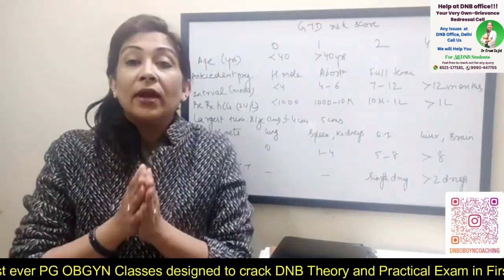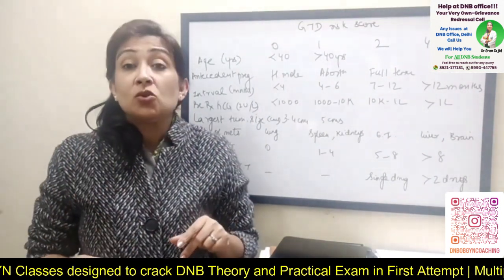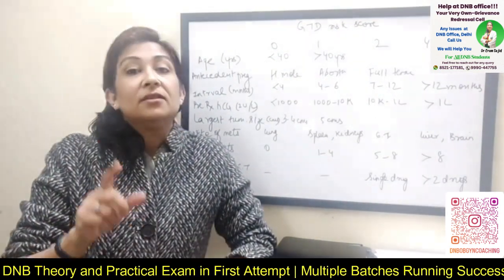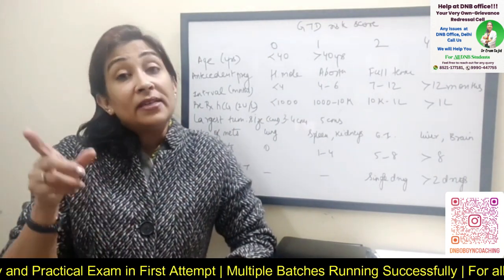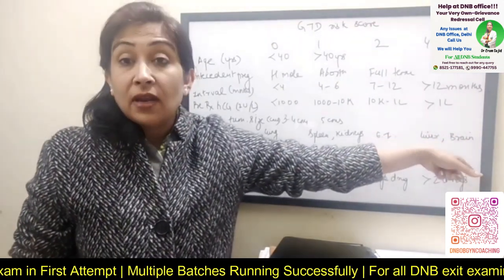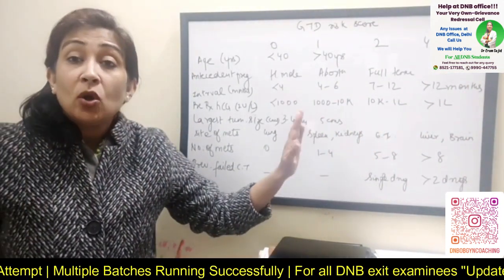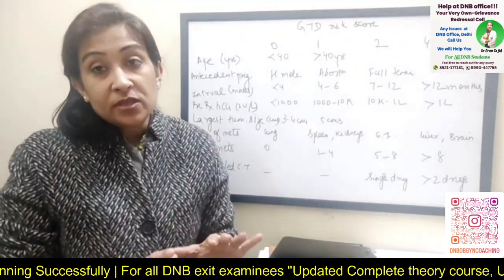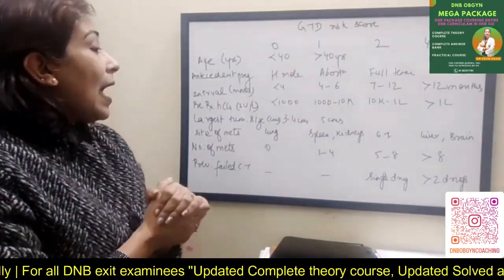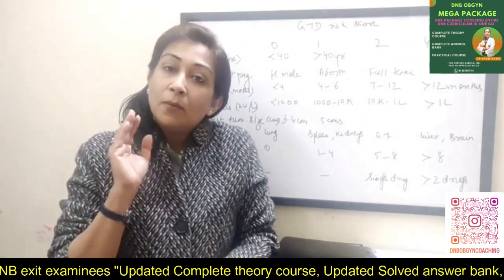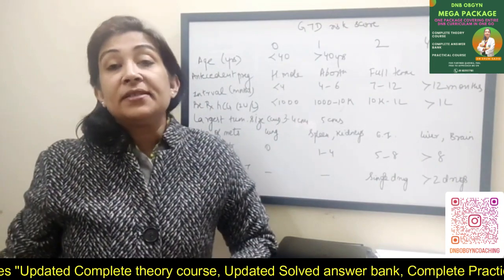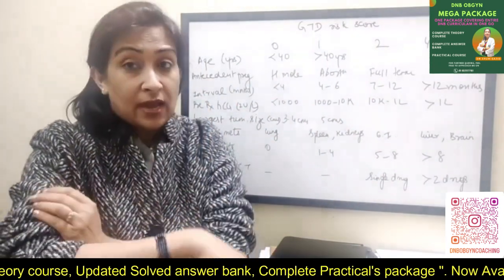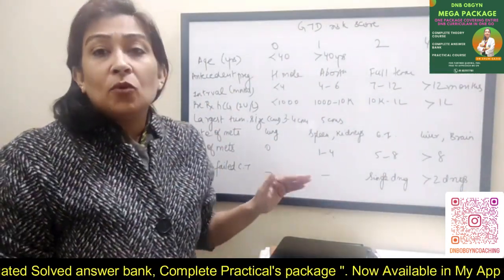Regarding metastasis: lung is the key site — unlike other malignancies where lung mets means stage four, in GTN it's only stage three. Stage four is all other sites. Even among non-lung mets, if it's spleen or kidneys it's still low risk — scoring zero and one. Lung, spleen, and kidneys are low risk; GI tract, liver, and brain are high risk. For number of mets, they are usually reported numerically — combine them all and check the total risk score. Above eight is high risk; above five is also high risk.